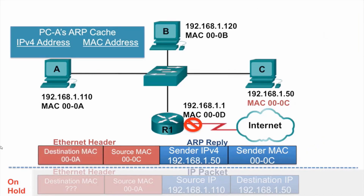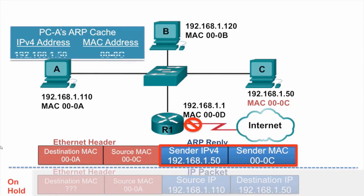PCA receives the ARP reply in response to its previous ARP request. It takes the information — the sender IPv4 address and the sender MAC address — and adds that information to its ARP cache.